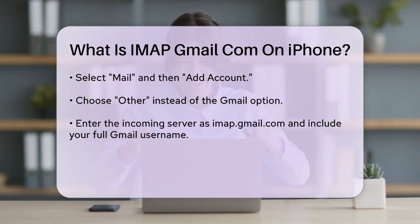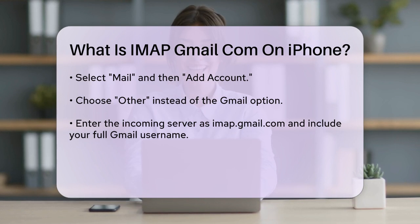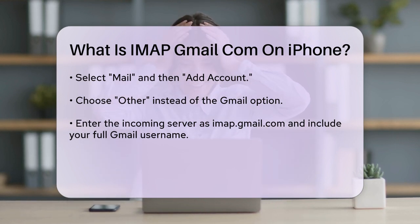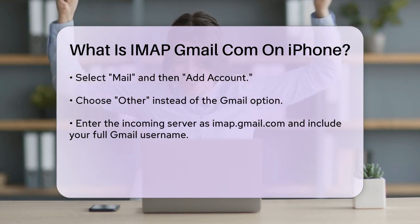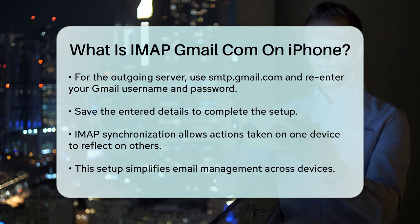Once you've entered all these details and saved them, your Gmail account will be set up using IMAP on your iPhone. This means that any actions you take on your iPhone, such as reading, sorting, or deleting emails, will be reflected in your Gmail account on your computer and vice versa. Using IMAP ensures that your inbox stays synchronized across all your devices, making it easier to manage your emails no matter where you are.